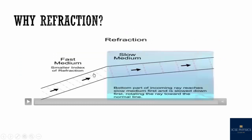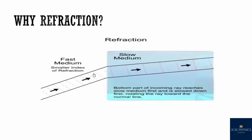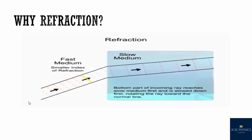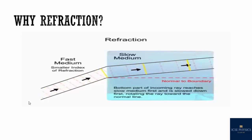Why does this bending occur when light travels from one medium to another? As the beam of light reaches the surface of the medium, the lower portion enters first and is slowed down. However, the upper portion is still traveling at the speed of light until it arrives at the surface and enters. This speed difference at the top and bottom of the light path causes it to bend towards the normal. The normal is an imaginary line drawn perpendicular to the surface.